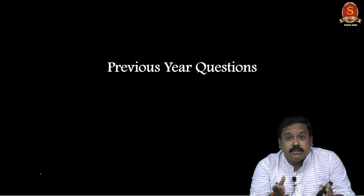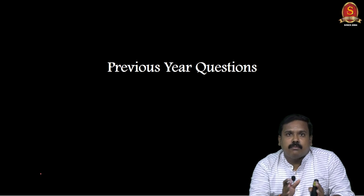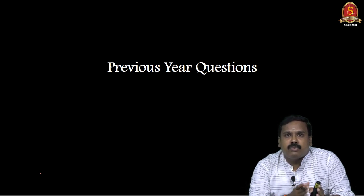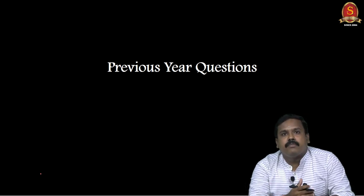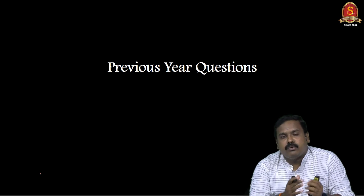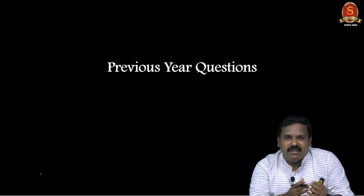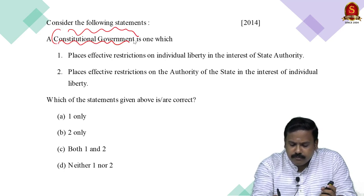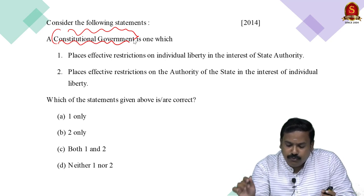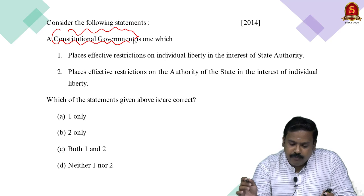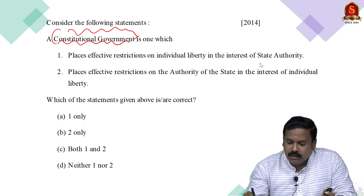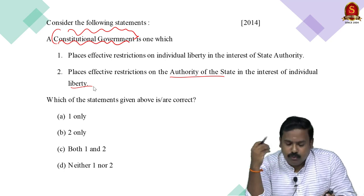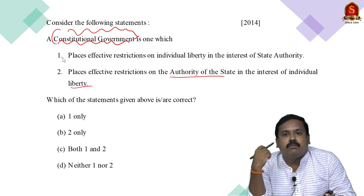For those who don't know the value of previous year question papers, I'm going to show a comparison from 2011 to 2021. There was a major change in 2011, so I'm confined to that specific period. The key point is how questions have been repeated in these phases. For example, a question about constitutional government was asked in 2014 as a two-statement question — whether it is a restriction on the individual in the interest of state authority, or a restriction on state authority in the interest of individual liberty. This question was rephrased and asked again subsequently.